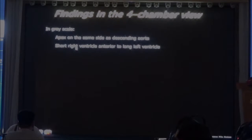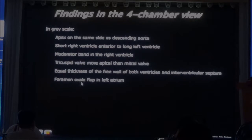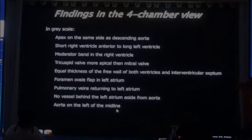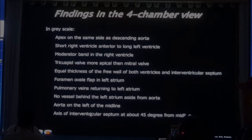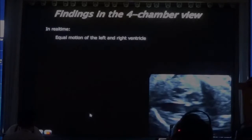In grayscale, you want to see that the apex is on the same side. The short right ventricle is anterior, with the long left ventricle. The moderator band is in the right ventricle. The tricuspid valve is more apical than the mitral valve. Equal thickness of all the walls. Foramen ovale flap into the left atrium — pay attention, foramen ovale flap. If you don't see it, the baby has atrial septal defect. Pulmonary veins returning to the left atrium. No vessels behind the left atrium aside from the aorta. And the aorta should be on the left side of the midline, and the axis of the interventricular septum should be 45 degrees to the midline. If you don't have this routine in your mind, make a copy next to your monitor and checkmark everything — do this for 50 exams, and after that it will become routine.